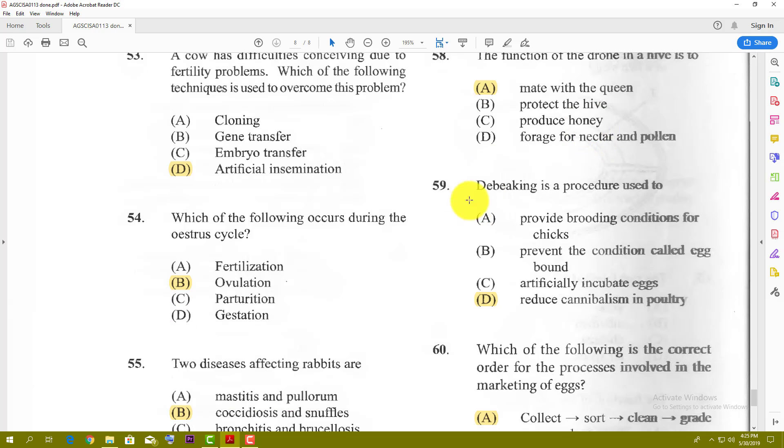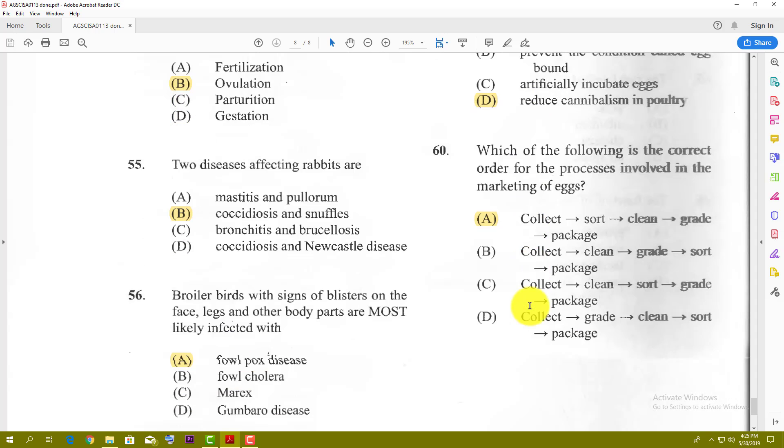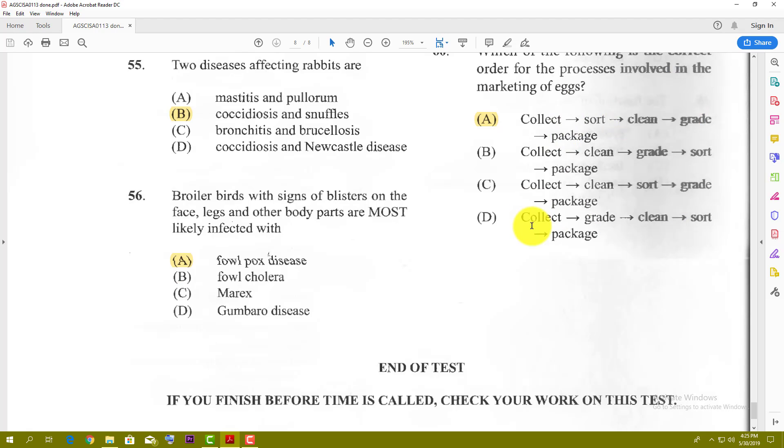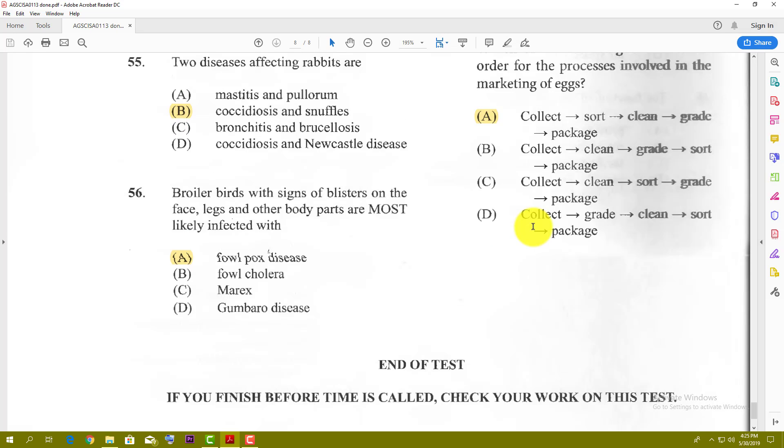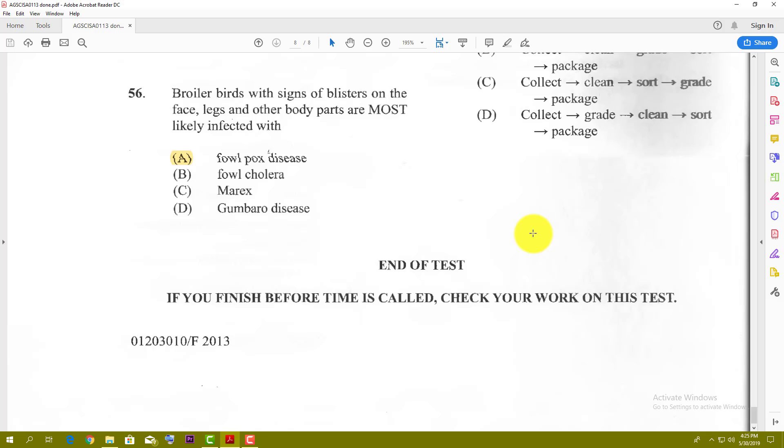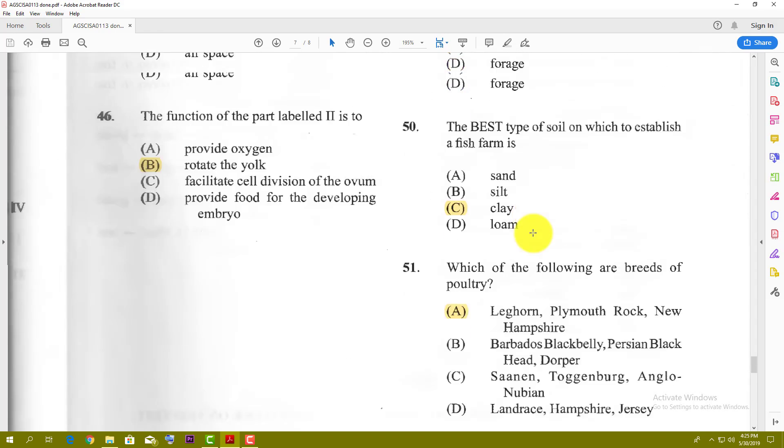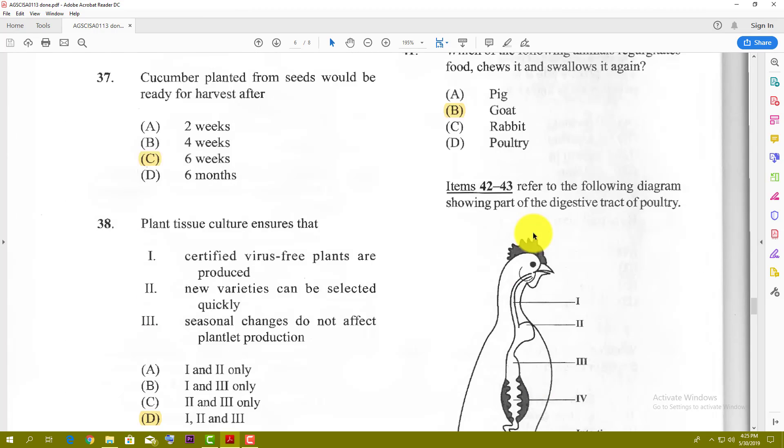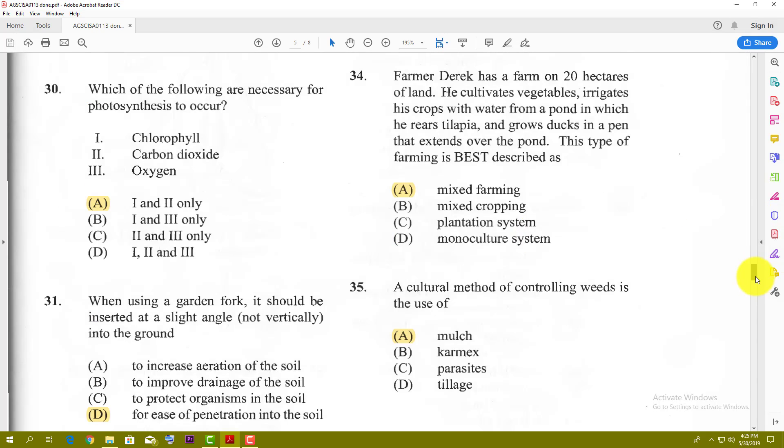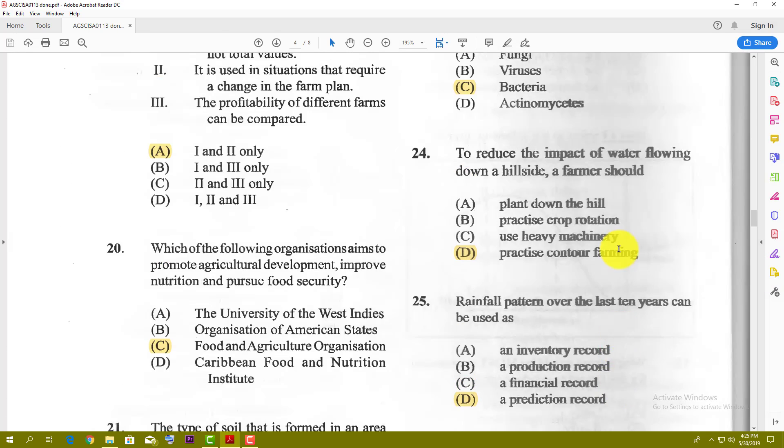Number fifty-nine: debeaking is a procedure used to reduce cannibalism in poultry. They cut off the beaks so they don't pick each other too much. And last but not least, which of the following is the correct order for the process involved in marketing eggs? Collect, sort, clean, grade, and package. That's the best order. Collect them, then you sort them—good from the bad—clean the good ones, grade them according to size, package them, and get them ready for sale. So that's the end of paper one, Agricultural Science single award from 2013. I might leave the 2014 paper soon, so hit the notification bell if you want to see when that video drops. That's it for now.